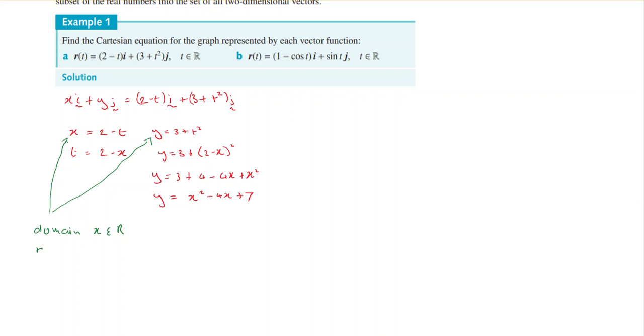And if we do the range, look at the y values. So we know that t is an element of R, but anything squared is going to be 0 or greater than 0. So looking at that, y is going to be 3 plus something greater than or equal to 0. So the range will be y is an element of 3 to infinity.